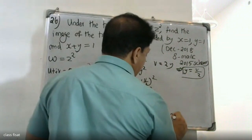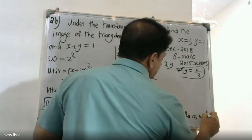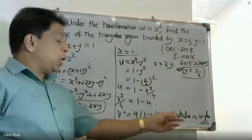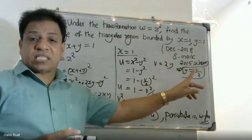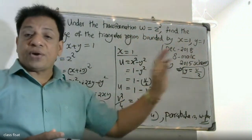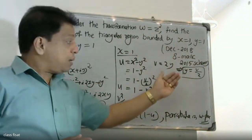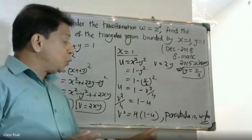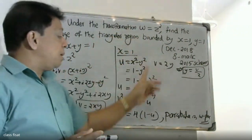This is a parabola. So v squared equal to 4 into 1 minus u is a parabola in the w-plane. This means the line x equal to 1 maps to a parabola in the w-plane.